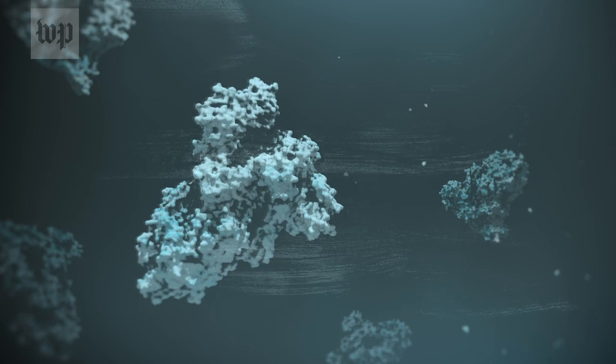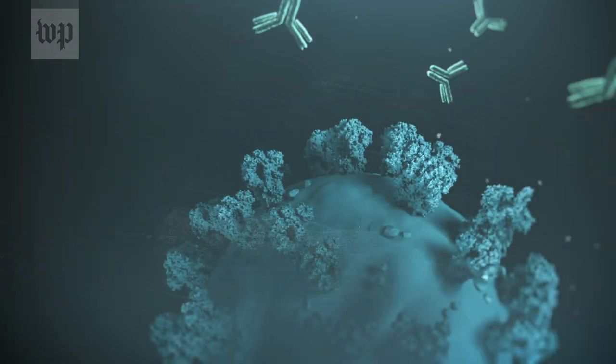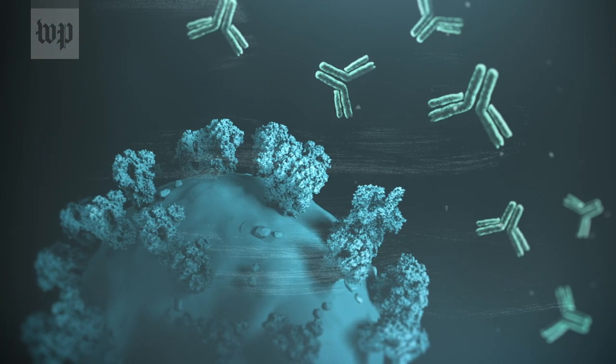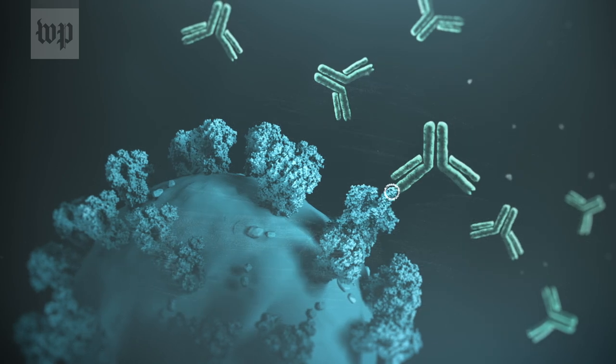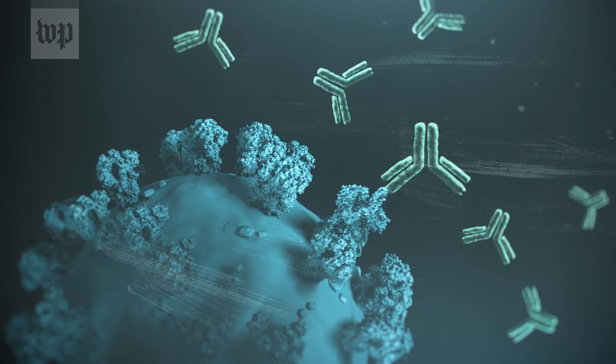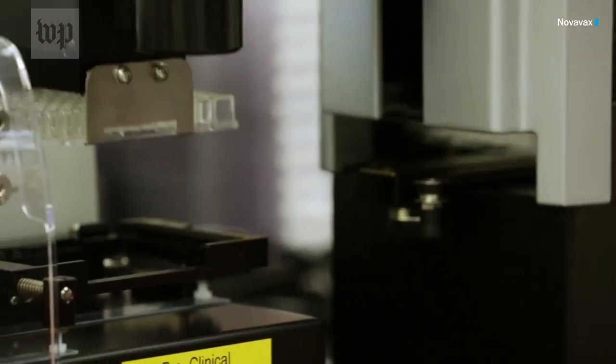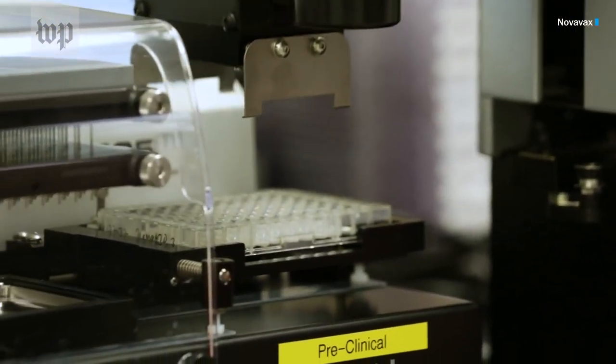So we want to make sure it looks like what it would be like in you, so when you make an immune response and you see the virus, the match is perfect. So that's what the insect cell does.